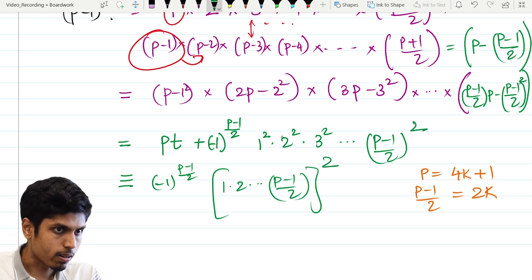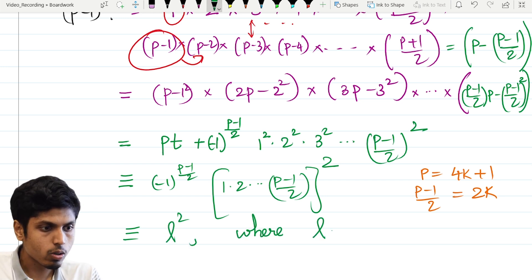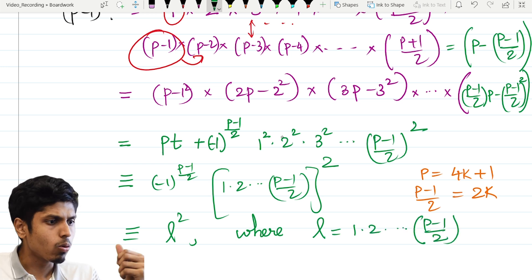p is of the form 4k plus 1. So if you think about p minus 1 by 2, it is equal to 2k which is even. Hence minus 1 power even is 1. So I can write it as some m square or maybe some l square where l is equal to 1 into 2 into till p minus 1 by 2. So what is the use of this? Why did we do this?